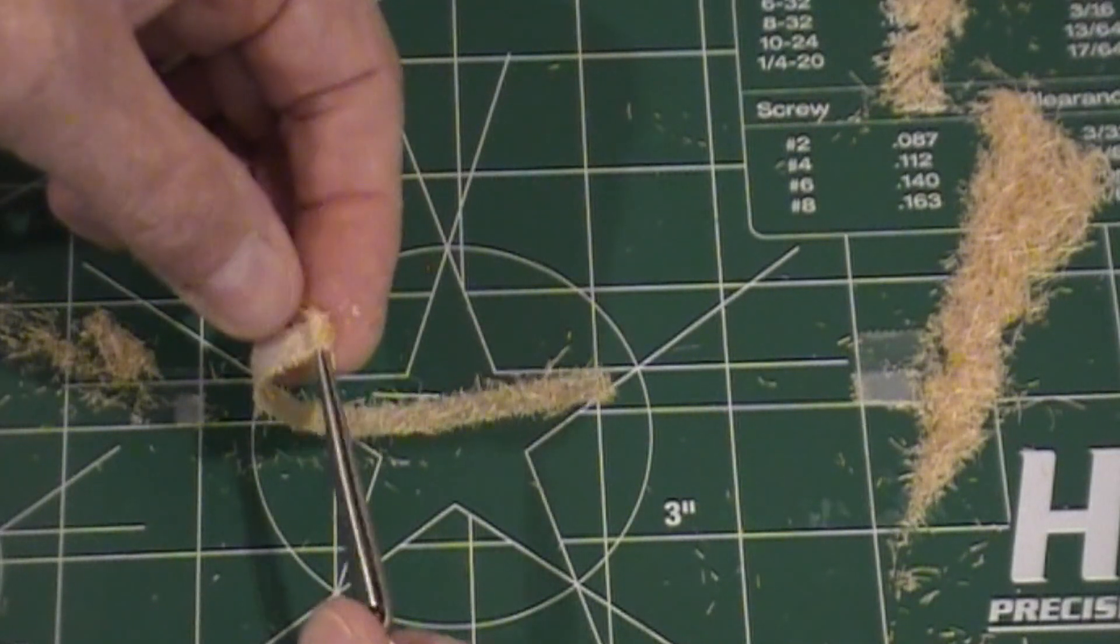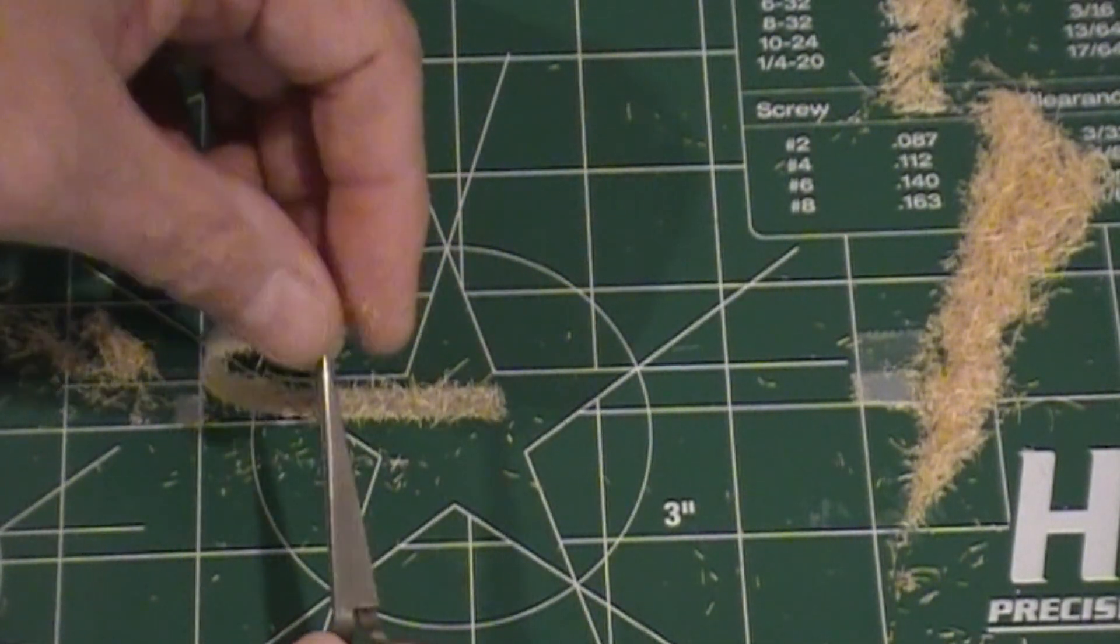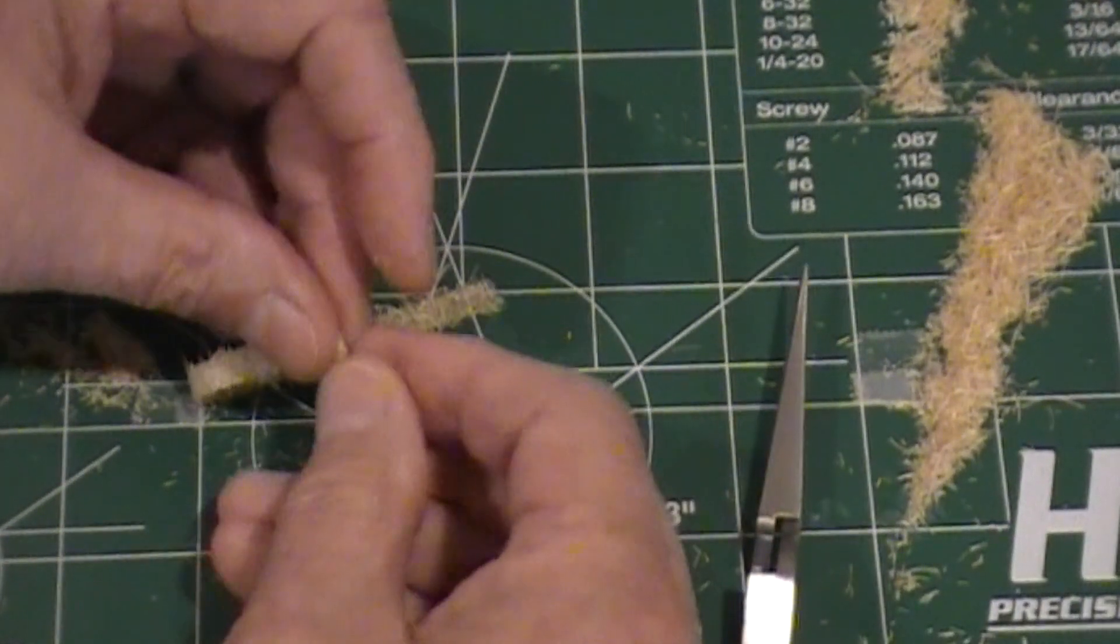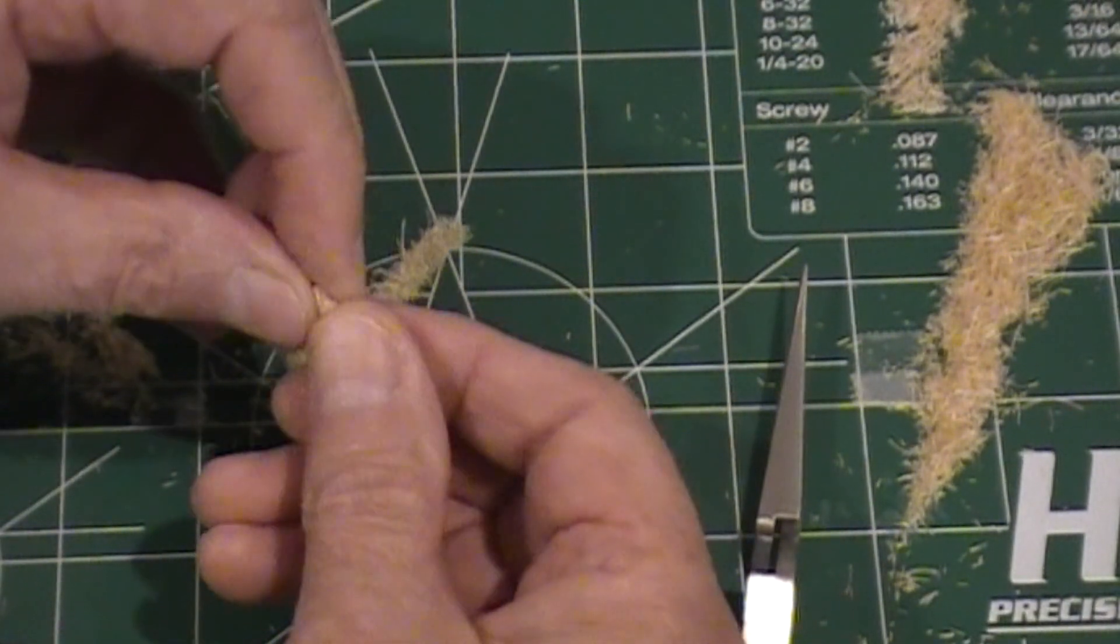Once we get three or four turns on here, we'll attempt to get the tweezers out of there. Pull it off of there, and now it's a case of rolling that up as tight as we can get it.